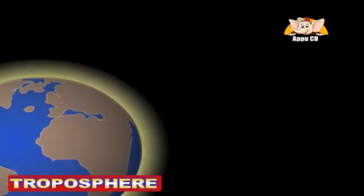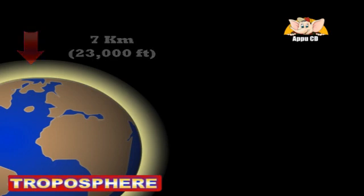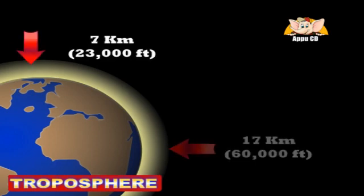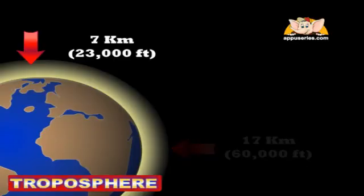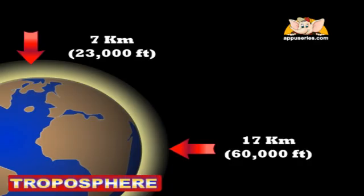The troposphere is the lowest layer of the atmosphere. It begins at the surface and extends to between 7 km at the poles and 17 km at the equator with some variation due to weather factors. This part of the atmosphere is the most dense.